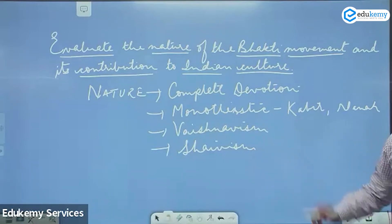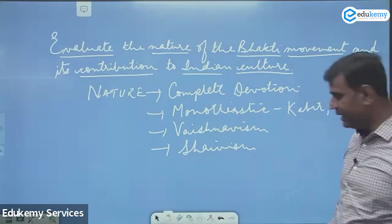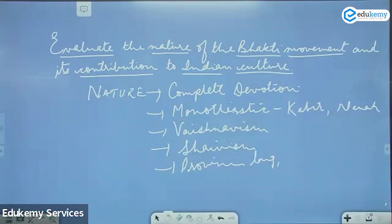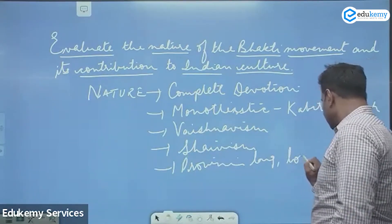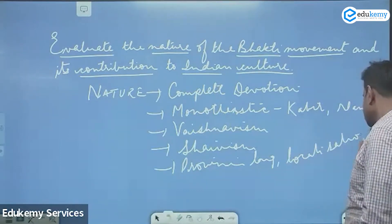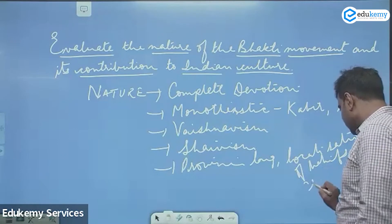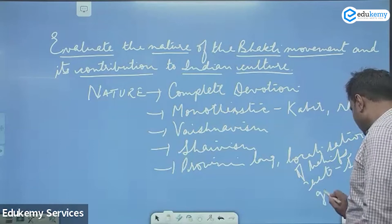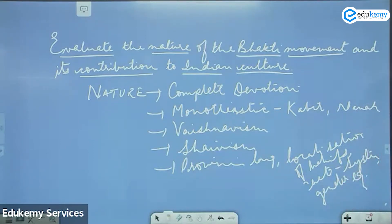Shaivism, monotheistic movement, then write the other features: provincial languages, localization of beliefs, caste system, gender equality. Major features of nature, give examples. Then you can write about even kirtan and sankirtan of Chaitanya Mahaprabhu. Then you can write finally the Bhakti movement had worldwide appeal indicated through Hare Krishna movement. All these are nature.